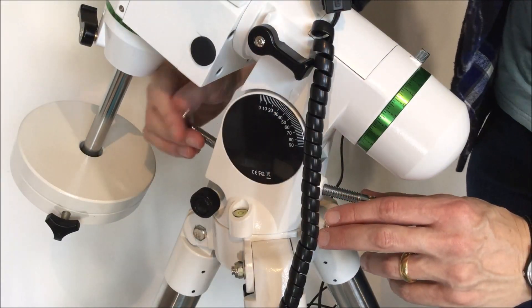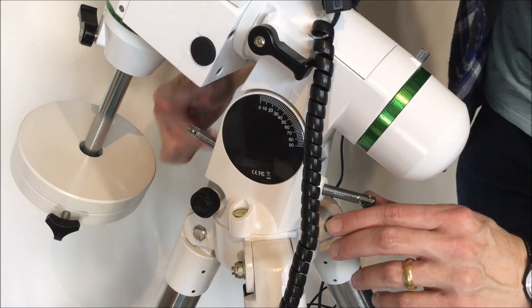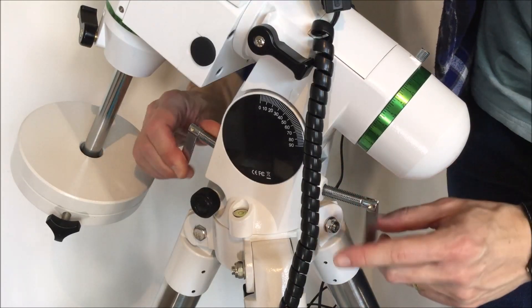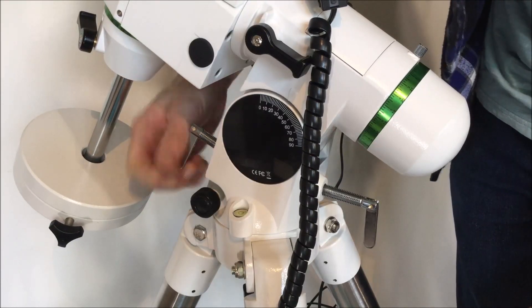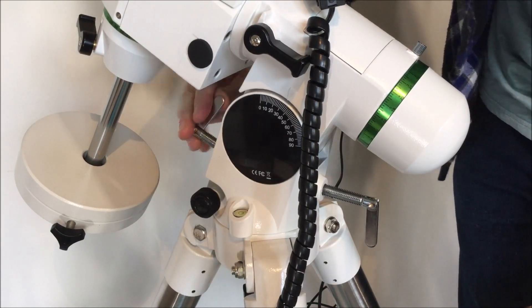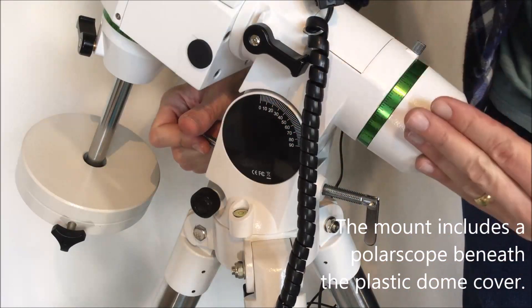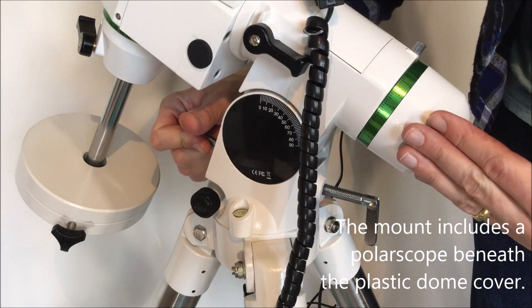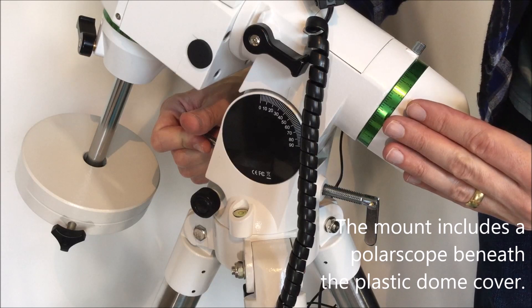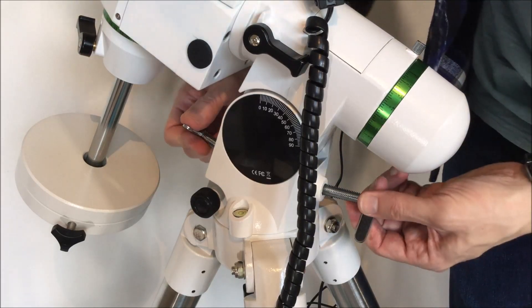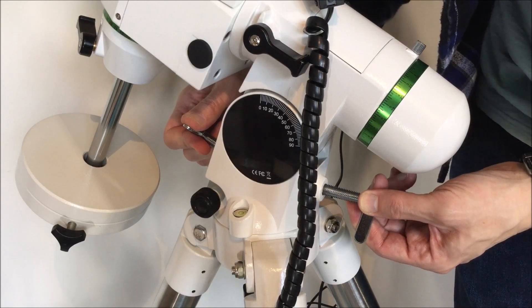And then if I tighten the other one, then and loosen this one, then we can reduce the angle of the mount. And eventually once you've got the polar axis of the mount pointed towards the north celestial pole or the south celestial pole, then you can lock these two bolts together to hold them out securely.